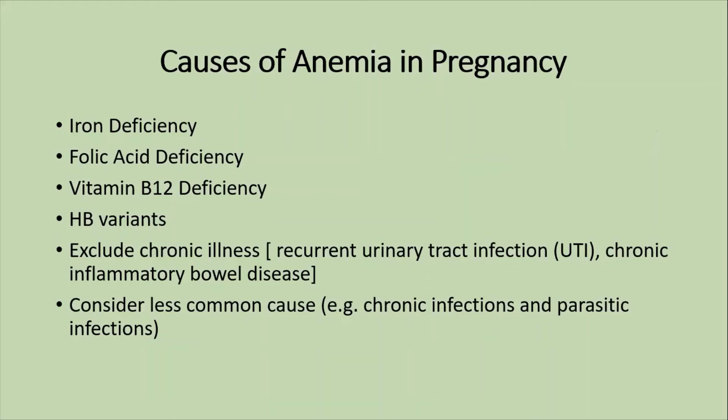Causes of anemia in pregnancy include iron deficiency, folic acid deficiency, vitamin B12 deficiency, hemoglobin variants, thalassemia, and sickle cell disease. Also consider chronic illnesses such as recurrent urinary tract infections and chronic inflammatory bowel disease, as well as less common causes such as chronic infections and parasitic infections.